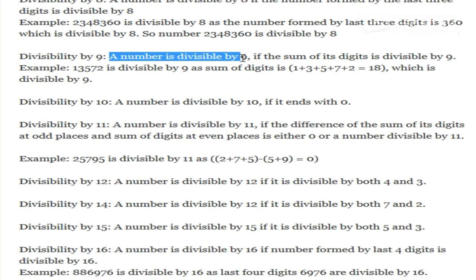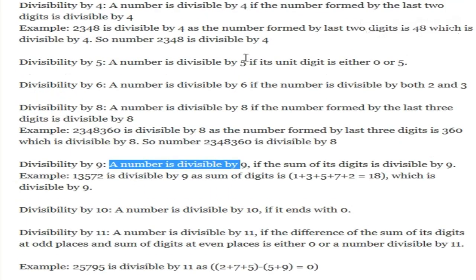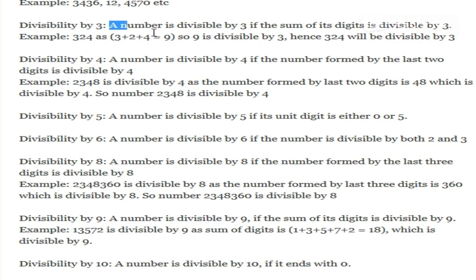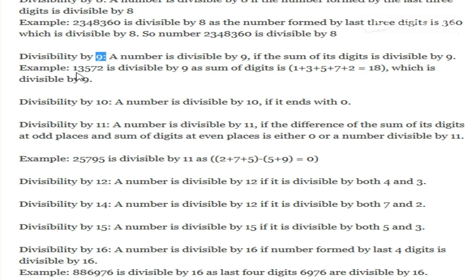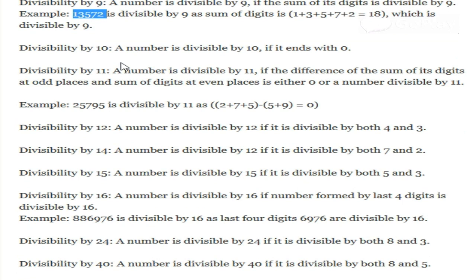Divisibility by 9: if the sum of its digits is divisible by 9, similar to the case of 3. In 3 we check the digit sum; in 9 we also check like this. For example, 1 plus 3 plus 5 plus 7 plus 2 equals 18. Since 18 is divisible by 9, that means this number is divisible by 9.